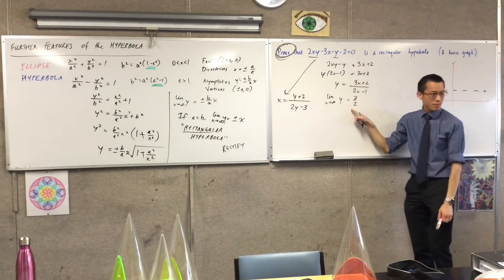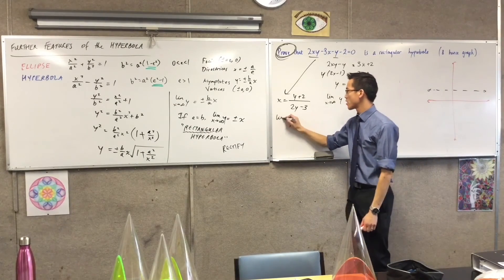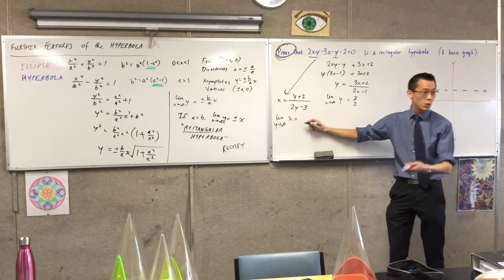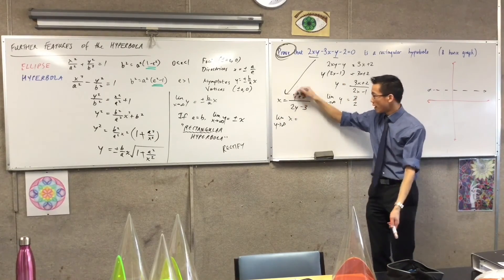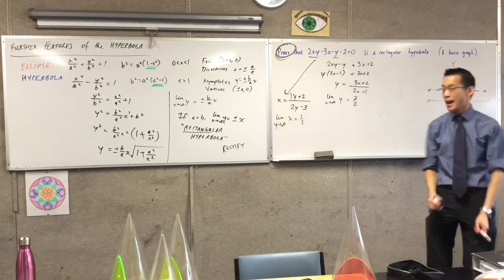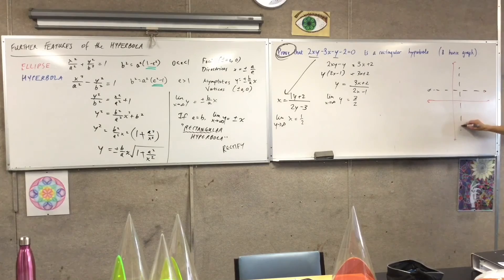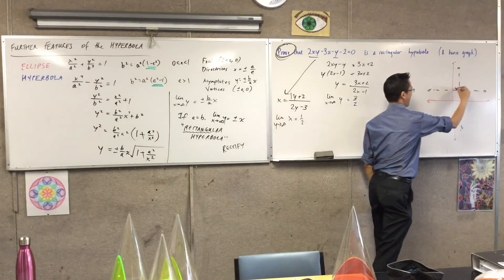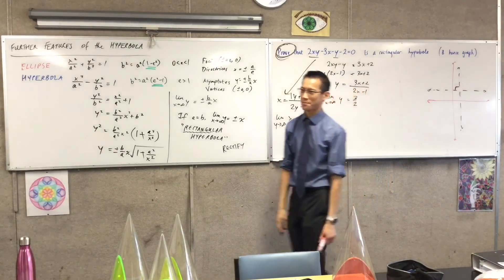I take the limit as Y approaches infinity. X is equal to - come on, tell me. It's 1 over 2, it's a half. That's a vertical line. And it looks to me like they're at right angles. Hold on.